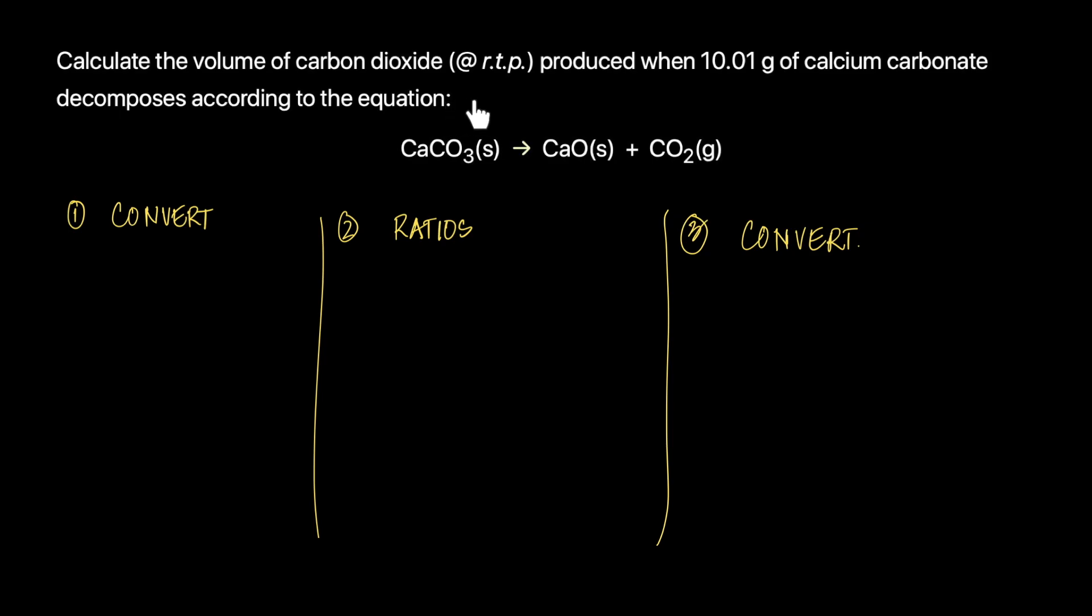Calculate the volume of carbon dioxide produced when 10.01 grams of calcium carbonate decomposes according to this equation. Well, we have to find out the volume of carbon dioxide. This is an interesting question, because what's given to you is mass of calcium carbonate, and you have to find the volume of carbon dioxide. So kind of a twist there, but you realize there's nothing to it. If you can do volume questions and mass questions, you can simply just do it. So let's figure out the moles of calcium carbonate, which is going to be the mass of calcium carbonate divided by the MR, which is 100, and you get 0.1001 moles. Now you have to apply ratios.